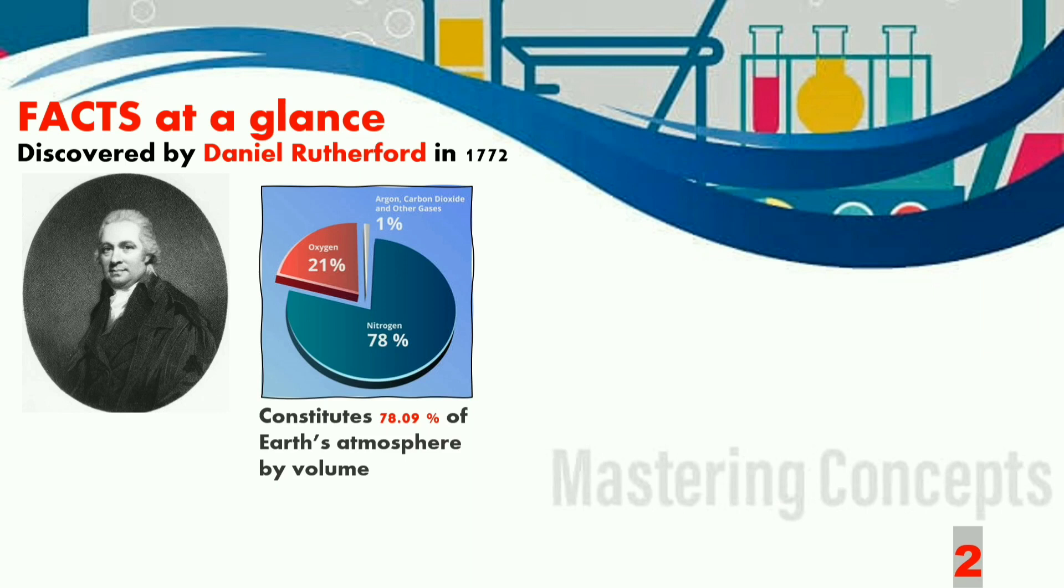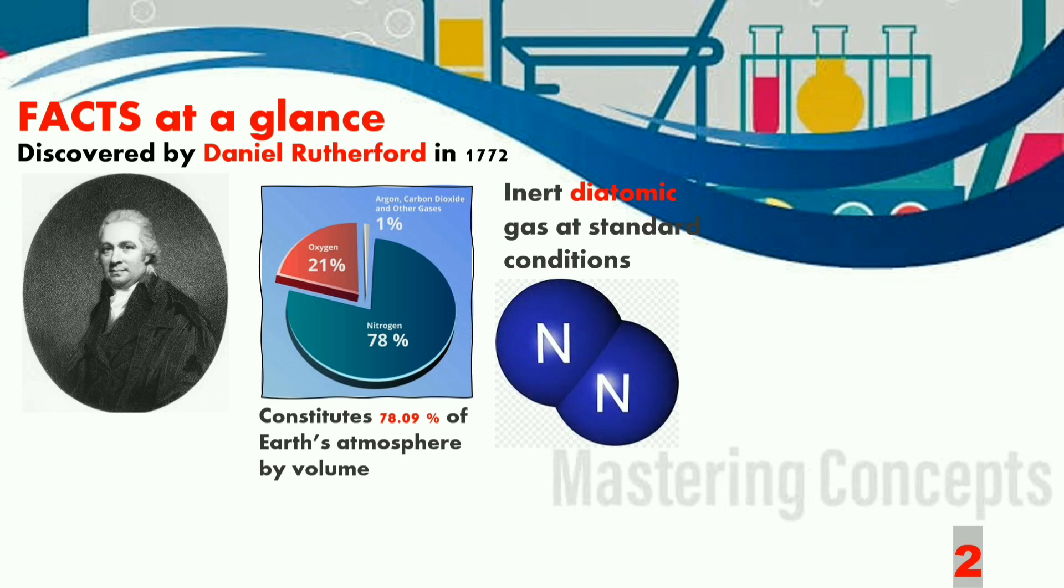Nitrogen gas constitutes 78.09 percent of the earth's atmosphere by volume, whereas the oxygen that we breathe in is only 21 percent.